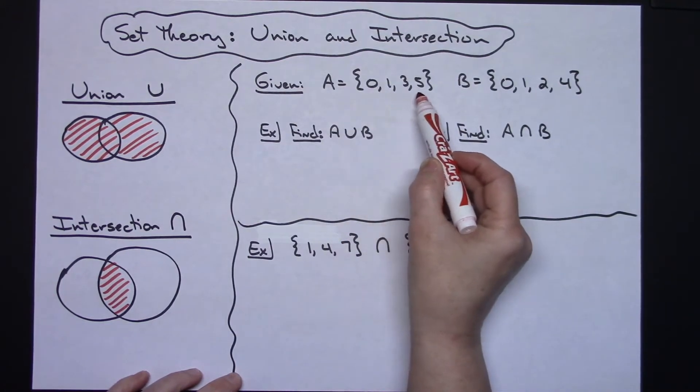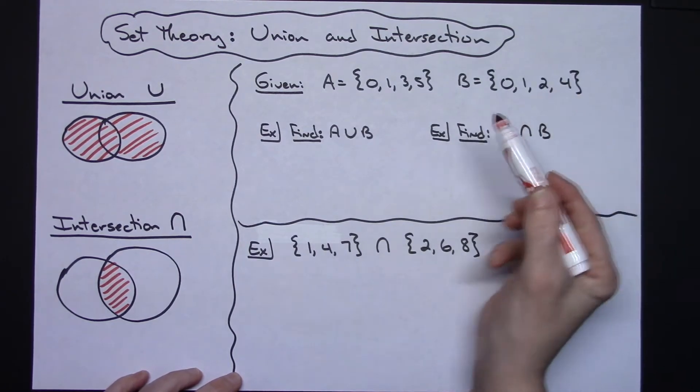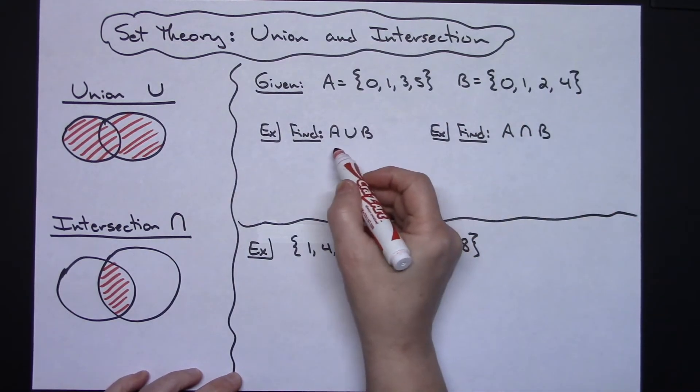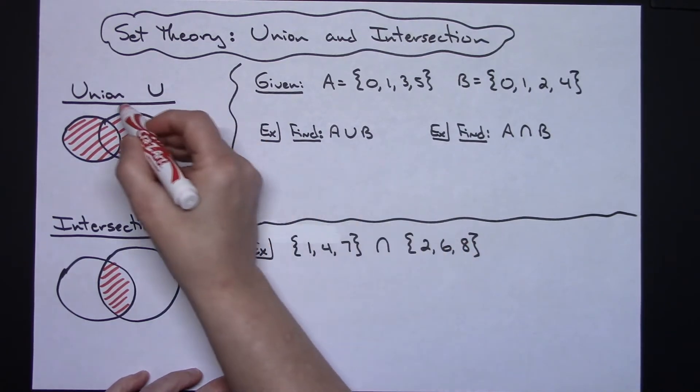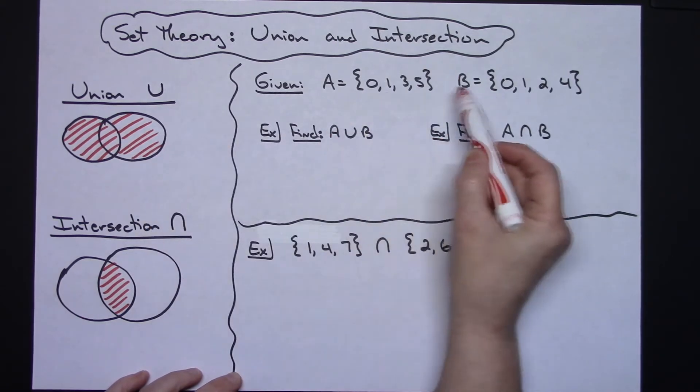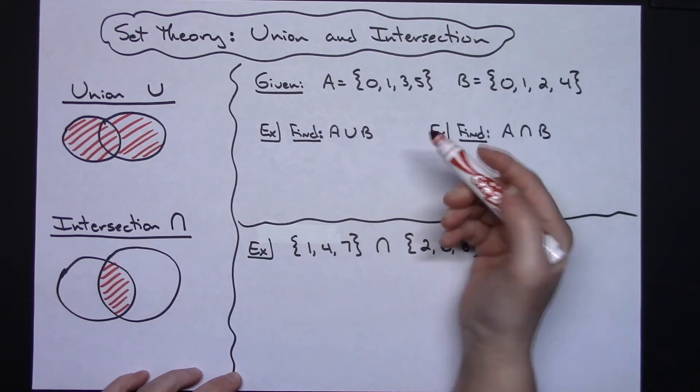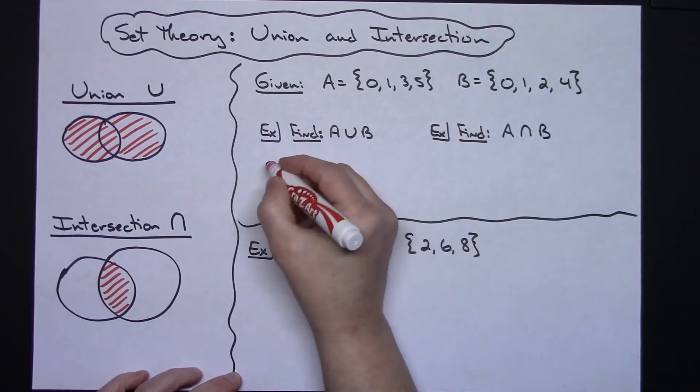Set A is {0, 1, 3, 5} and set B is {0, 1, 2, 4}. So from given that information, I can find A union B. Union means it's all of both sets put together—each number that is in both sets all put together in a final set.